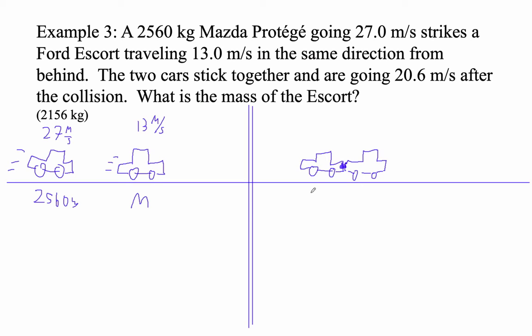So this mass is, oh, this is going to be hard. 2,560 plus M, right? And it's going 20.6 meters per second. Ooh, this is going to be good. All right.